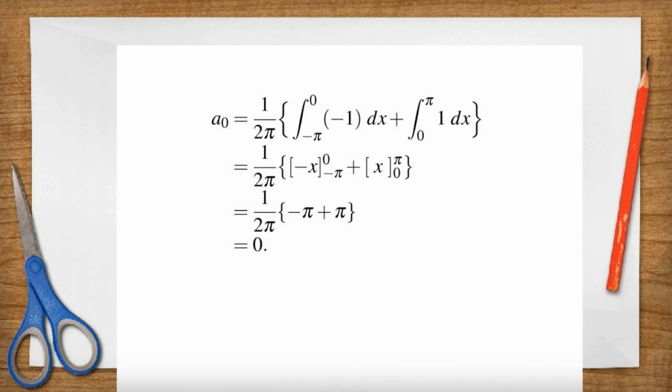So now let's have a look at the integrations. So here's the one for a₀. We expected it to be zero. And in fact the integral tells us that a₀ does in fact equal zero.